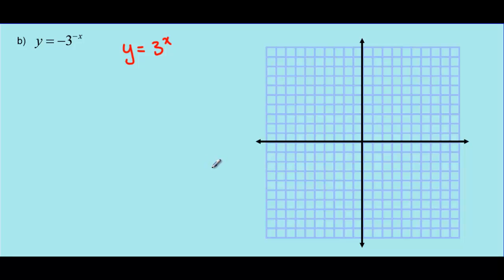Let's sketch the first initial point. Because there's no a value, the initial value is 1. The next value will triple, so when x equals 1 the point is at y equals 3, and when x equals 2 the point is at y equals 9. Going in reverse, when x is negative 1 we take a third of the initial value, giving us a point at 1 third. We get ever so close to the x-axis, and again there's going to be an asymptote there. Let's use Desmos to see what this equation looks like when graphed.